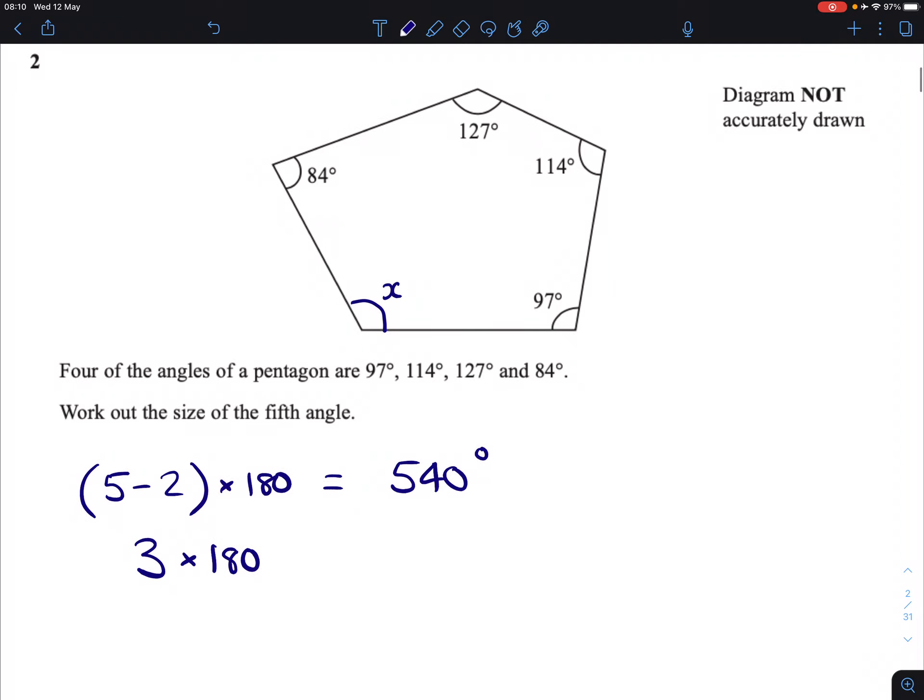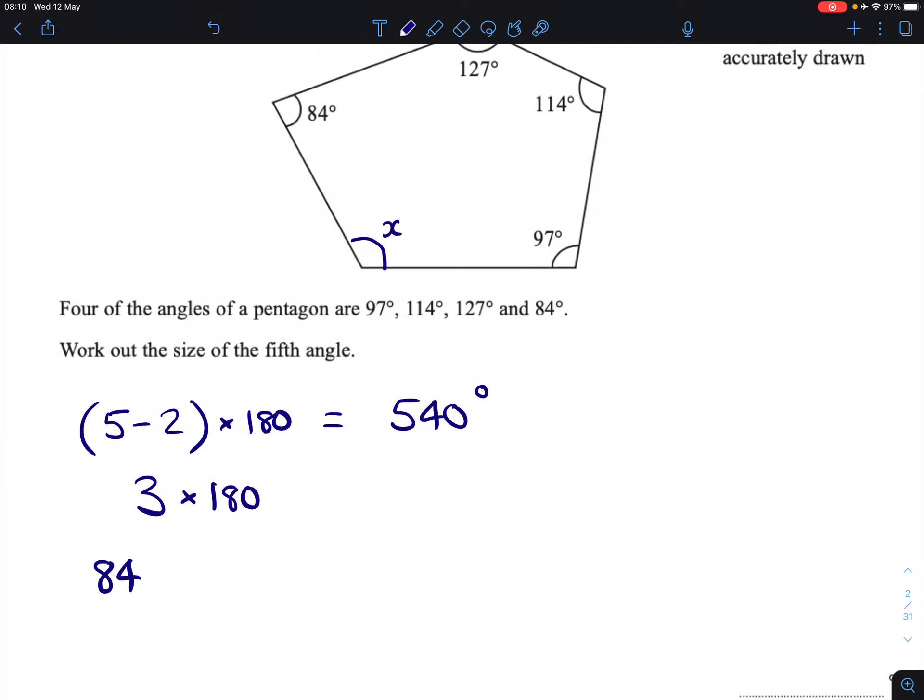If we add together 84, 127, 114, and 97, then we get 422 degrees.